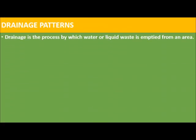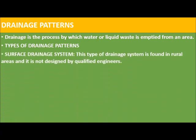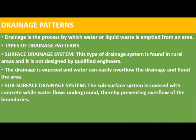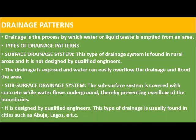Drainage patterns: drainage is the process by which water or liquid waste is emptied from an area. Types of drainage patterns: 1. Surface drainage — this type of drainage system is found in rural areas and is not designed by qualified engineers. The drainage is exposed and water can easily overflow and flood the area. 2. Subsurface drainage system — covered with concrete while water flows on the ground, thereby preventing overflow. It is designed by qualified engineers and is usually found in cities such as Abuja and Lagos in Nigeria.